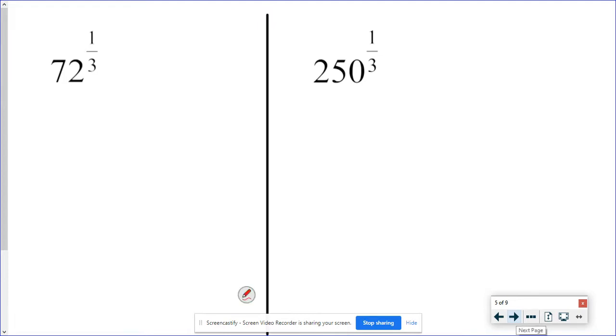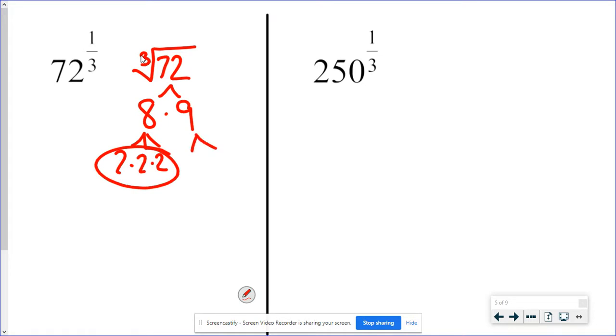72 to the one third power, again, is a cube root of 72. Don't forget to put the three there. Don't think, oh, I'll remember it. If it's a one third power, you have to have the three in the index spot. 72, let's go with eight times nine. So eight is going to be two times two times two. Got it. The nine is a three and a three. Remember, this is a cube root. I need three of a kind to be able to break out. There's not enough threes to break out. So the two breaks out. The leftover stuff, these threes, go back together to make a nine right there.